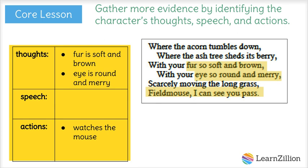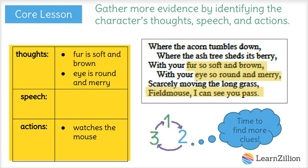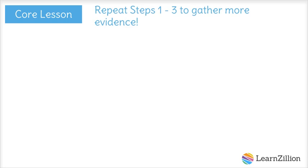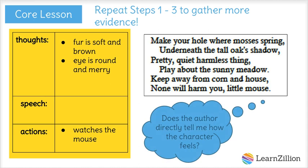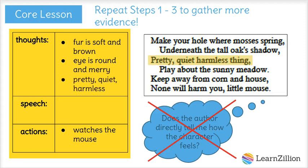This is some good evidence, but before I can figure out how the character feels, I think I need to gather some more examples. The last stanza is another part where we get more information about the speaker and the mouse. The author does not directly tell me how the speaker feels, so I have to gather evidence by identifying thoughts, speech, and actions. In line 21, the speaker describes the mouse as a pretty quiet, harmless thing. Then in lines 23 and 24, the speaker tells the mouse to keep away from corn and house so that none will harm you, little mouse — trying to tell the mouse what to do so that he will stay safe.